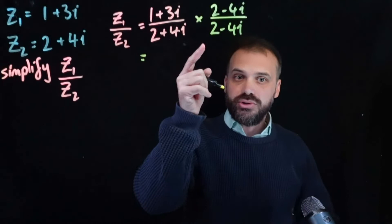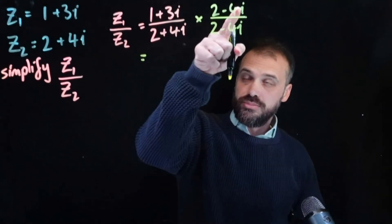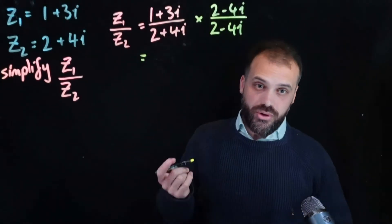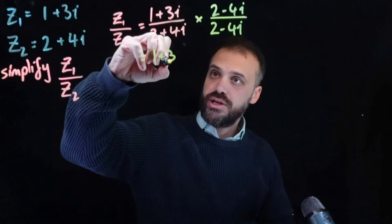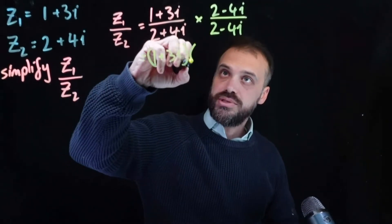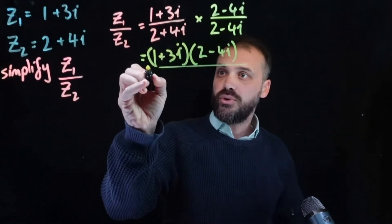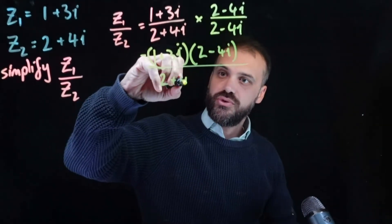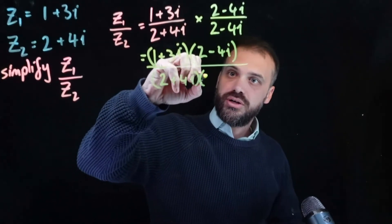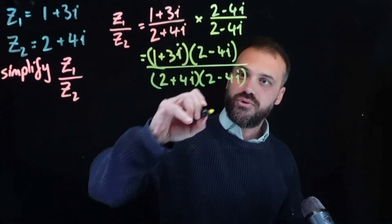Now, when you multiply two fractions, it's the top times the top and the bottom times the bottom. So this is 1 plus 3i times 2 minus 4i, over, all over, 2 plus 4i times 2 minus 4i.